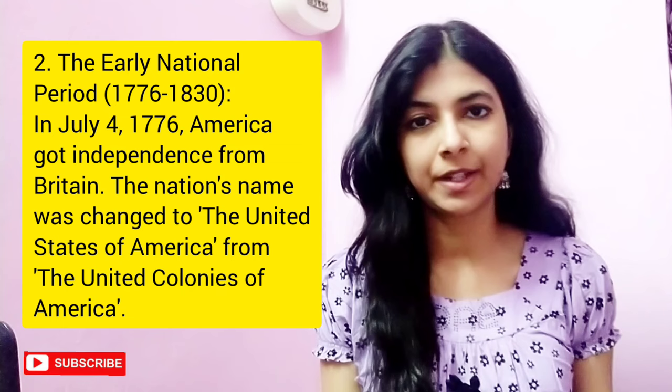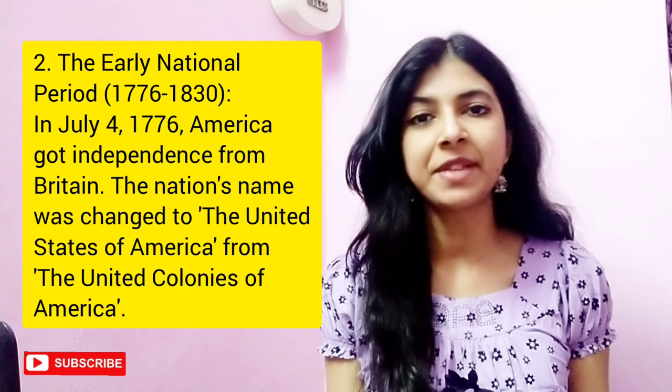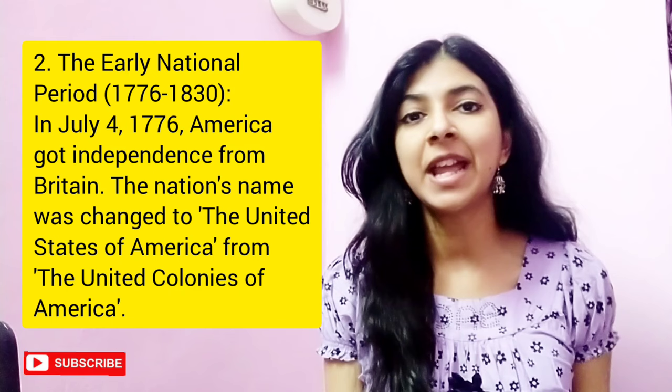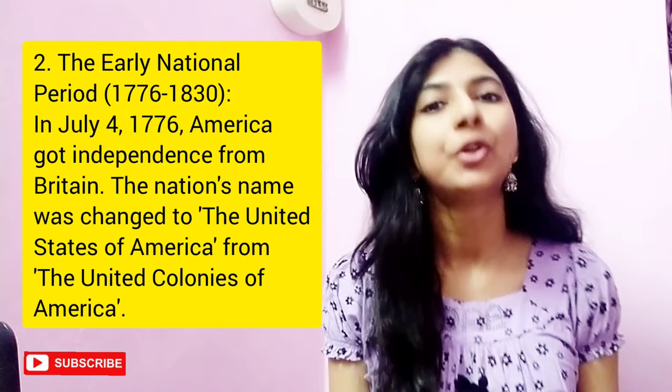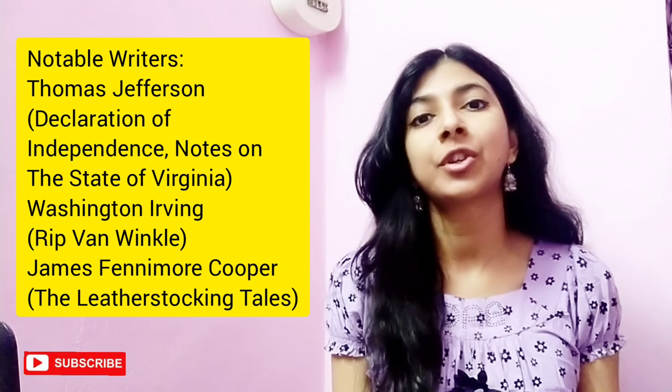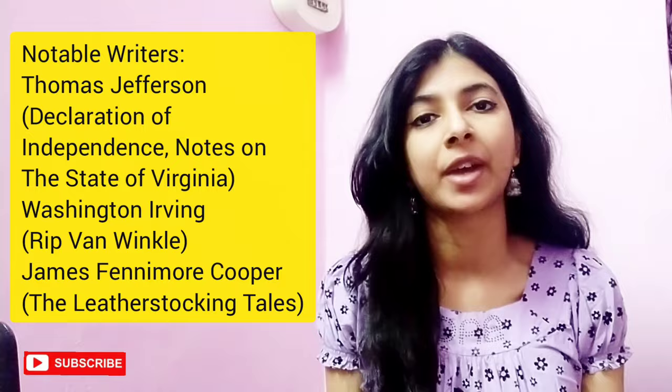Next, we have the Early National Period, 1776 to 1830. On July 4th, 1776, America got independence from Britain. The nation's name was changed from the United Colonies of America to the United States of America. A notable writer of this period is Thomas Jefferson, who wrote The Declaration of Independence and Notes on the State of Virginia. Other notable writers are Washington Irving, known for Rip Van Winkle, and James Fenimore Cooper, who wrote The Leatherstocking Tales.